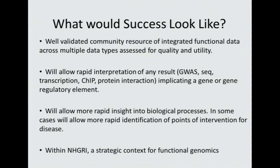To reiterate what success would look like: it would be a well-validated community resource of integrated functional data across multiple data types, assessed for quality and utility. It would allow rapid interpretation for any result implicating a gene or gene regulatory element, allow more rapid insight into biological processes, and in some cases allow more rapid identification of points of intervention for disease. Within NHGRI it would provide a strategic context for the functional genomics programs we undertake.